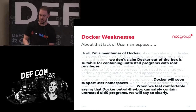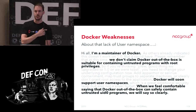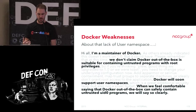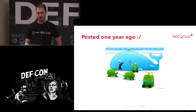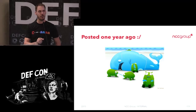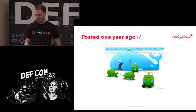Speaking of the user namespace, the Docker maintainer mentioned on Hacker News a year ago: 'We will soon have support for user namespaces. When we feel comfortable that Docker can run UID untrusted zero, we will say so clearly.' That was more than a year ago and they still don't have it. To give them credit, I think one major reason is that it was actually a limitation of Go, not necessarily their fault. But they're on it now and hopefully it will be soon.